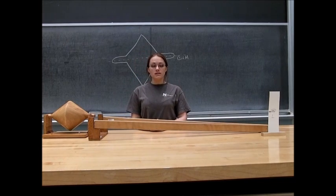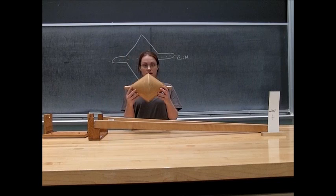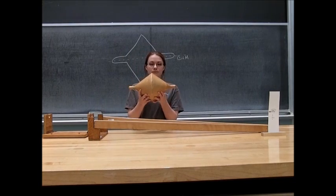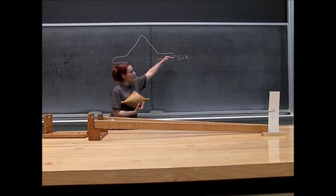This demonstration is known as the cone rolling uphill. It consists of a double-sided cone that has pegs on either side, where the center of mass of this cone is in line with those pegs.